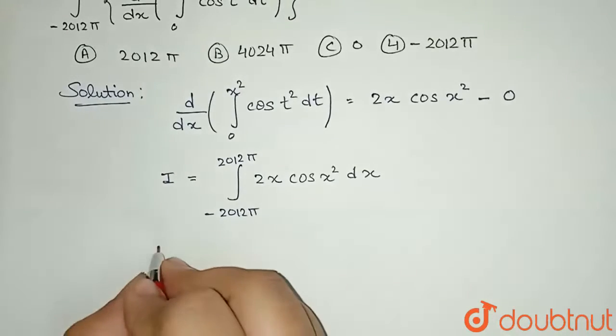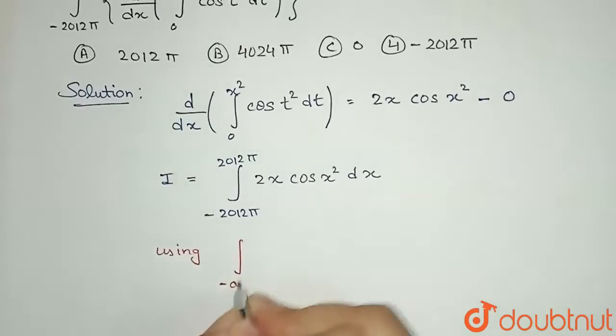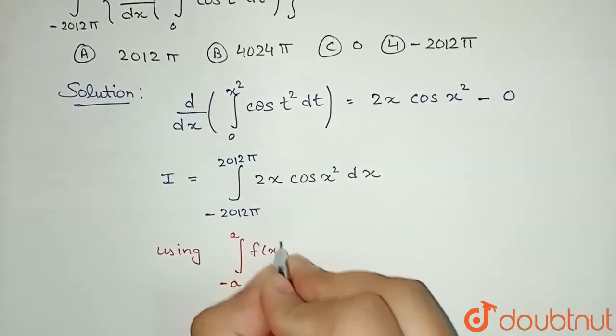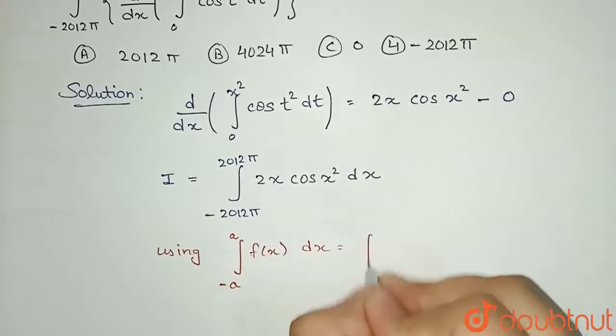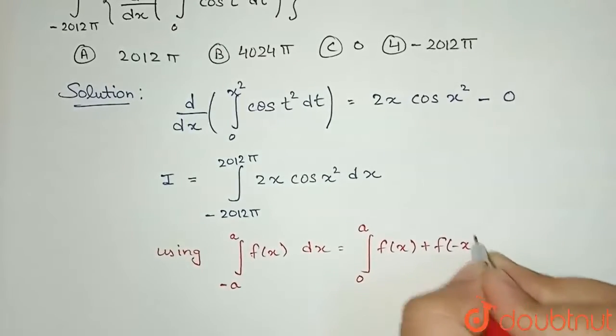If you see here, this is of the form -a to a. So I can use the property: integral from -a to a of f(x)dx equals integral from 0 to a of f(x) plus f(-x).